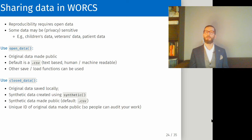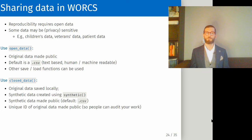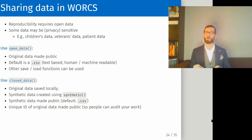WORCS has unique solutions for data sharing. A common dilemma is that full reproducibility requires sharing data, but some data is privacy sensitive — for example, children's data or data about veterans or mental health patients. If you have a data set that can be shared without reservation, such as in a meta-analysis, you can use the WORCS function open_data. This function simply adds your data to the GitHub repository and uploads it. The default file format is CSV — a text-based format readable by humans and machines without any licensed software. You can also use other custom save or load functions if necessary.